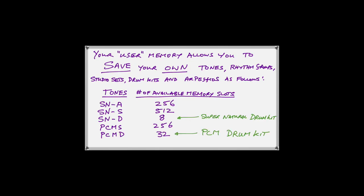Your user memory allows you to save your own tones, rhythm groups, studio sets, drum kits, and arpeggios. The tones include drum kits because they are treated just like tones — they're in the tone list and you save them the same way. Here is the maximum number of available memory slots: 256 memory slots for Acoustic Supernatural tones, 512 for Supernatural Synth tones, and only 8 Supernatural drum kits.